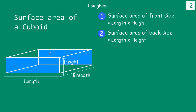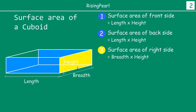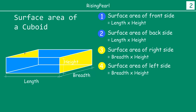Similarly, the area of the back side, which is exactly opposite to the front side, is also length times height — the same as the front one. Now let's look at the right side of the cuboid. This is a rectangle whose two dimensions are breadth and height, so the area of this yellow rectangle is breadth times height. Similarly, for the left side directly across, the area is also breadth times height.